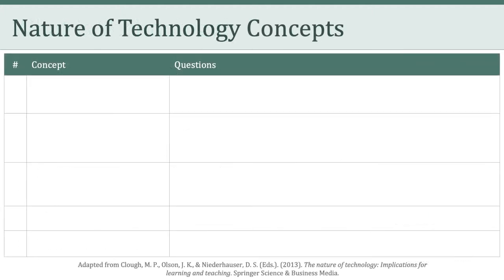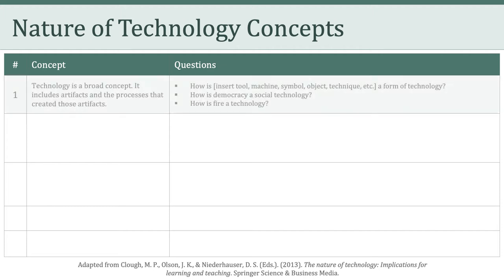This brings us to ten concepts related to the nature of technology. The first concept is that technology is broad. It includes artifacts and the processes that created those artifacts. Examples of technology include, among other things, tools, machines, things, symbols, objects, and techniques. Some questions we can continuously ask ourselves include: how is Google a form of technology? How is democracy a social technology? How is fire a technology?